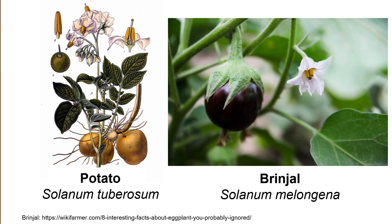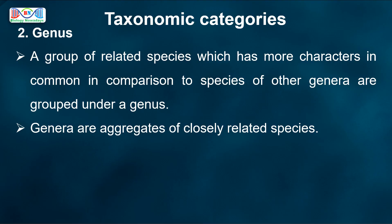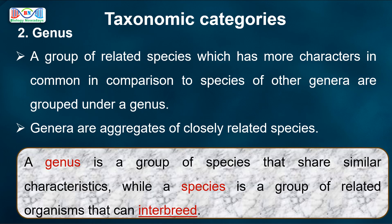For example, potato and brinjal are two different species. They cannot interbreed to produce a fertile offspring. But both belong to the genus Solanum because of some similarities in leaf arrangement, arrangement of veins in leaves, and related vegetative and reproductive structures. So a genus is a group of species that share similar characteristics, while a species is a group of related organisms that can interbreed.